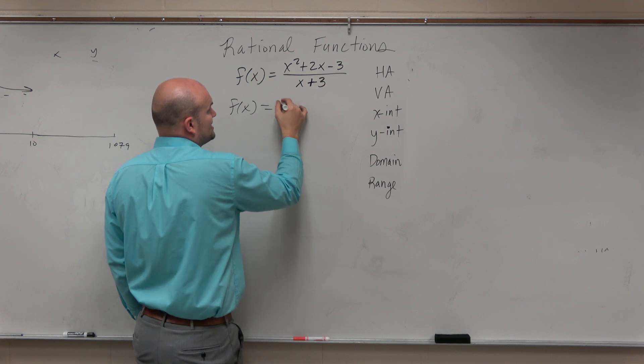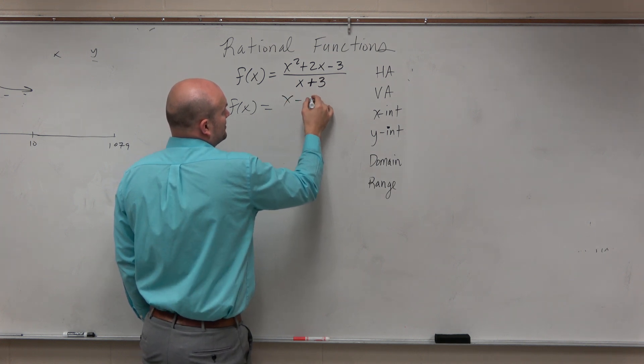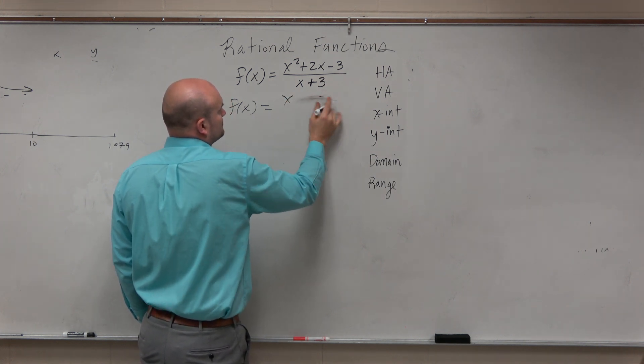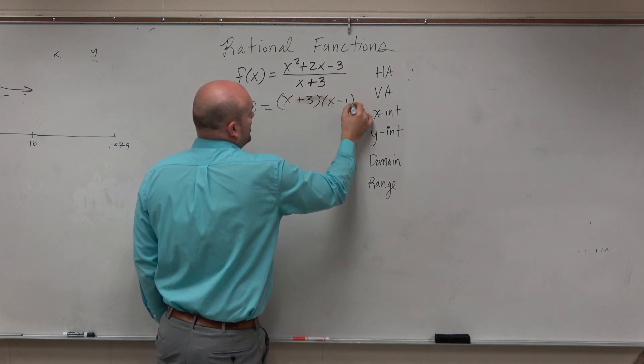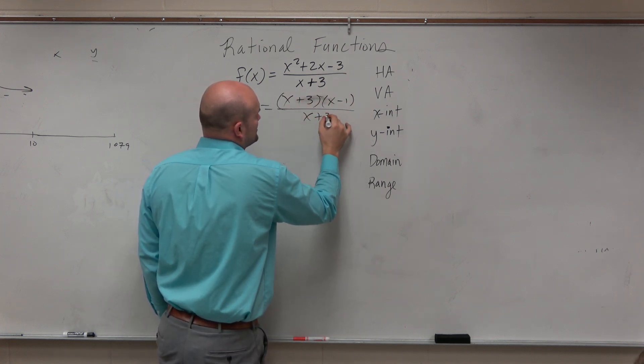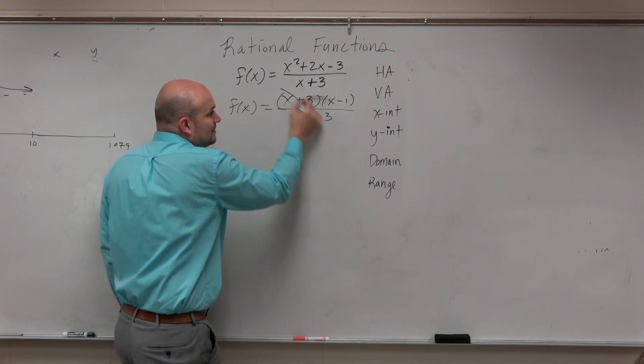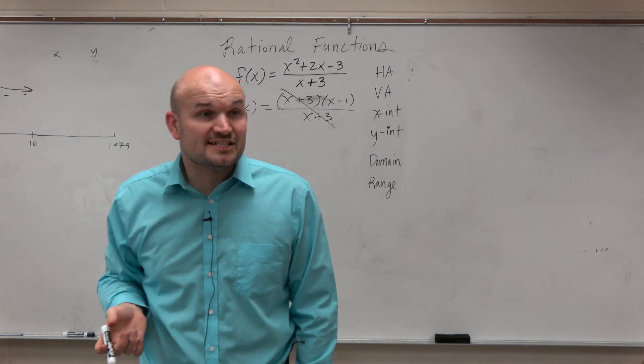So we go ahead and factor this and we say, alright, that's x plus 3 times x minus 1 all over x plus 3. And oh my, look at that. My discontinuity divides out.